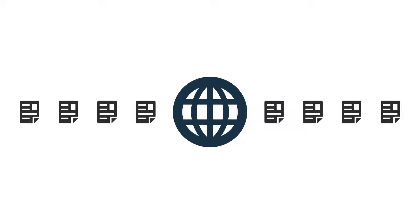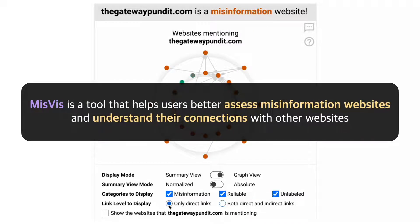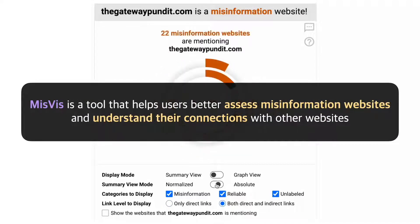As the internet has become the major source of information for many people, identifying web misinformation has become crucial. However, most existing methods have primarily focused on alerting users of misinformation without any explanation. We introduced Misfits, which helps users better assess misinformation websites and understand their connections with other websites.